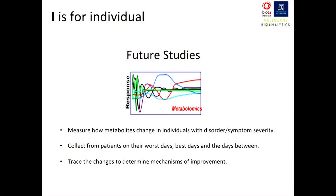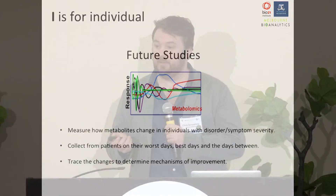I covered ME and metabolism — the 'I' is actually for the individual, which brings us to future studies. As mentioned at the start, metabolomics fluctuations are quite rapid, so looking at many individuals at a single point, you could get someone at very different states and assume they're comparable. Combining that with all the genetic and other individual factors, it seems more pertinent to research the individual over time — looking at how they change from their worst to their best days and the days in between — and seeing whether you can trace changes in metabolism that explain those improvements.